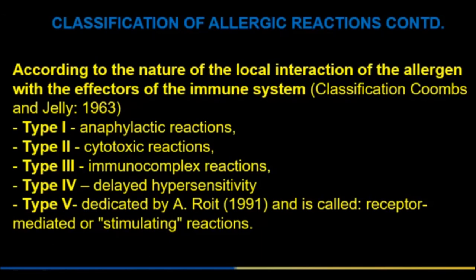The Coombs and Gell classification from 1963 describes five types: Type I — anaphylactic reactions; Type II — cytotoxic reactions; Type III — immunocomplex reactions; Type IV — delayed hypersensitivity; Type V — stimulating (receptor-mediated) reactions.